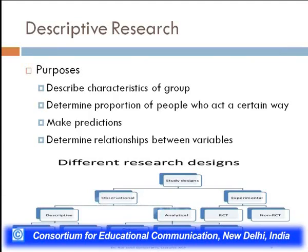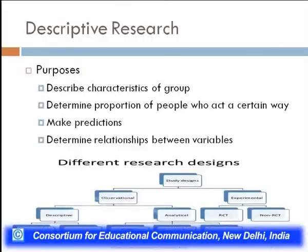The purposes of descriptive research are: describing the characteristics of a group, determining the proportion of people who act a certain way, making predictions, and determining the relationship between variables. The study designs of descriptive research are of two types: observational and experimental. Observation is of two types — descriptive and analytical — and experiment is again of two types — RCT and non-RCT.